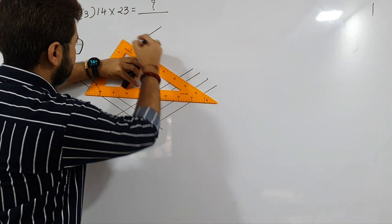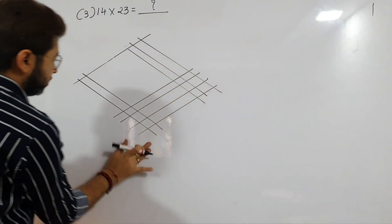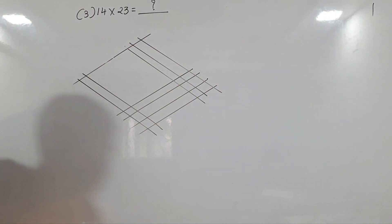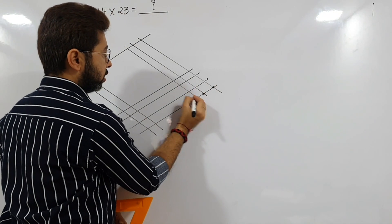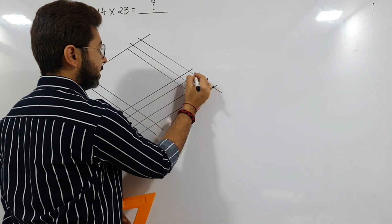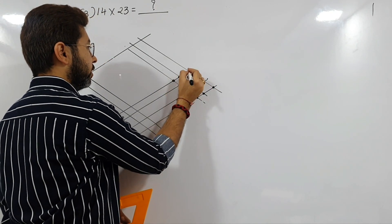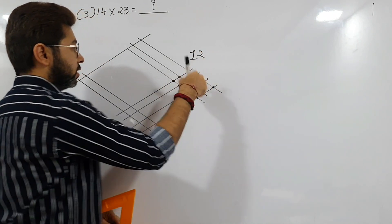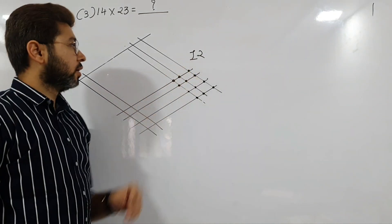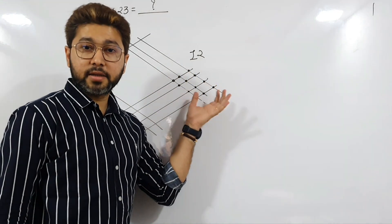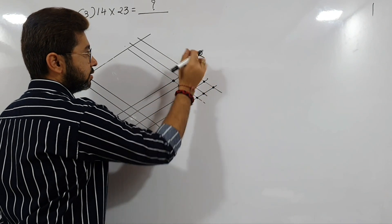Again, dividing into three equal zones. Counting from the first zone: one, two, three, four, five, six, seven, eight, nine, ten, eleven, twelve — this time the number is greater than ten. Now what do we do when numbers are greater than ten? Keep the last digit as it is, and move the first digit.